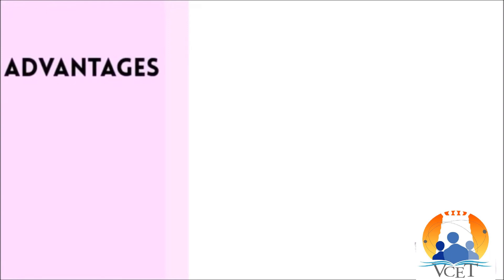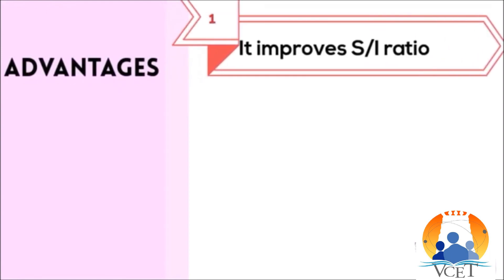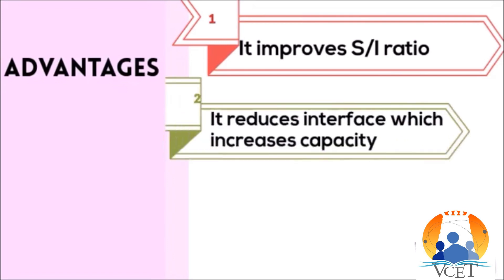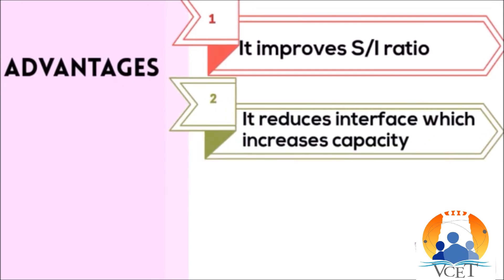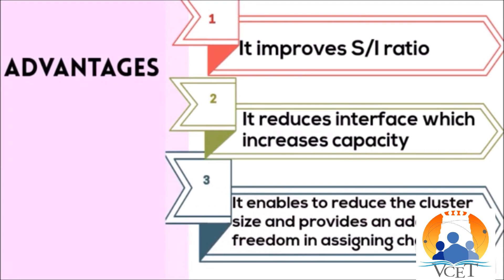Advantages of cell sectoring: it improves the signal-to-interference ratio, reduces interference which increases capacity, and enables reduction of the cluster size, providing additional freedom in assigning channels.